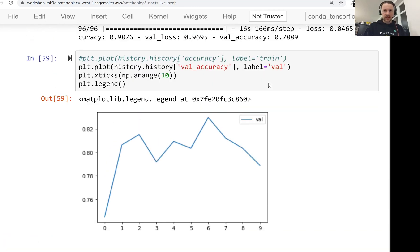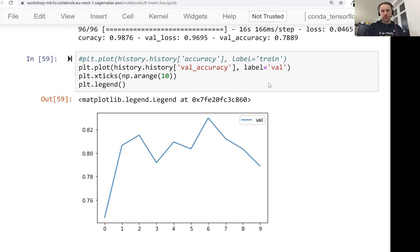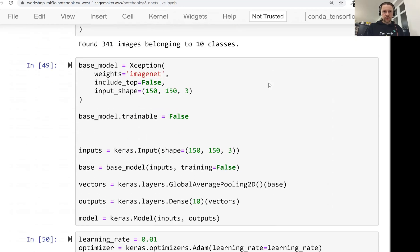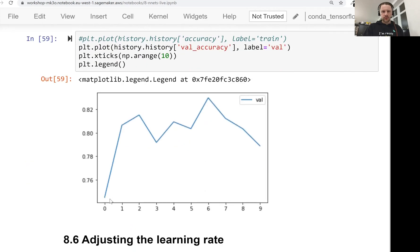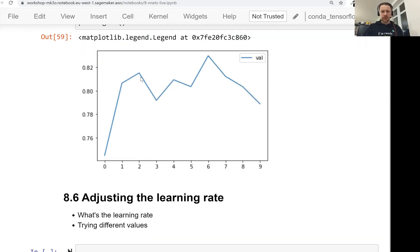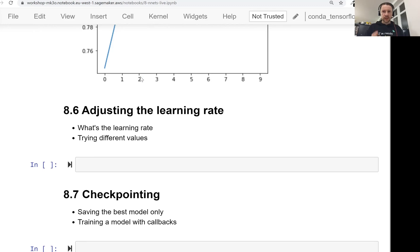In the previous lesson, we trained our first model. We used transfer learning, which is we took a model that is already pre-trained. We took a model that is already pre-trained and we removed the dense layers. So include top equals false means do not include the dense layers. And then we added a dense layer here ourselves and we trained this model. This model achieved 81% accuracy approximately. And in this lesson, we want to adjust the learning rate and see which one is a good one.